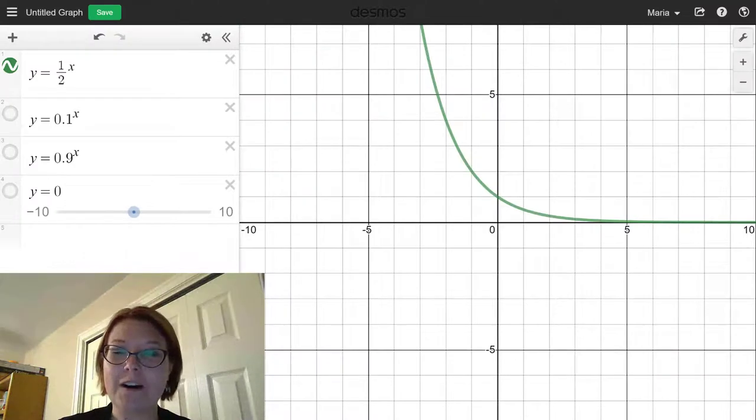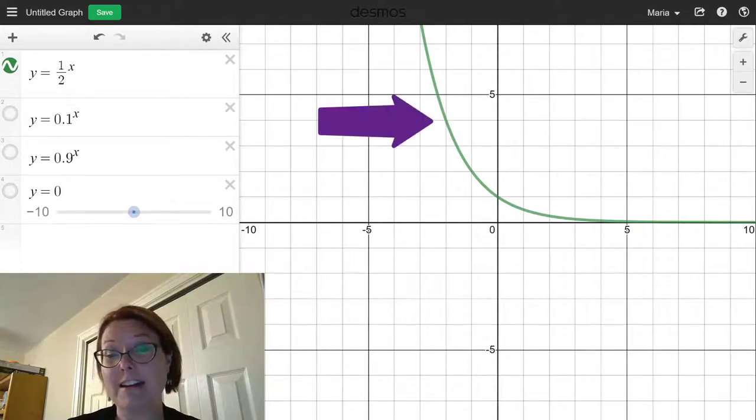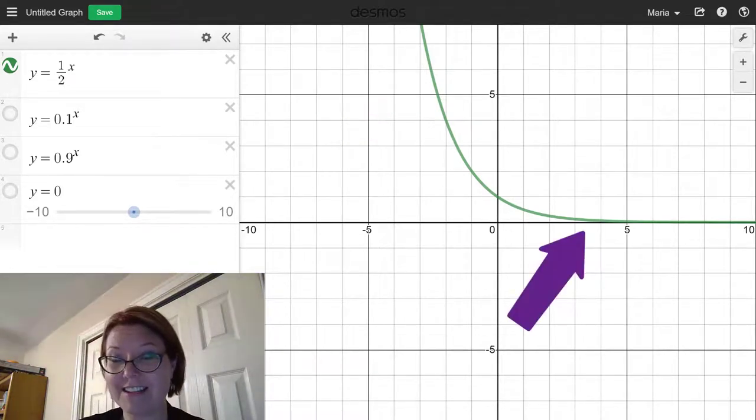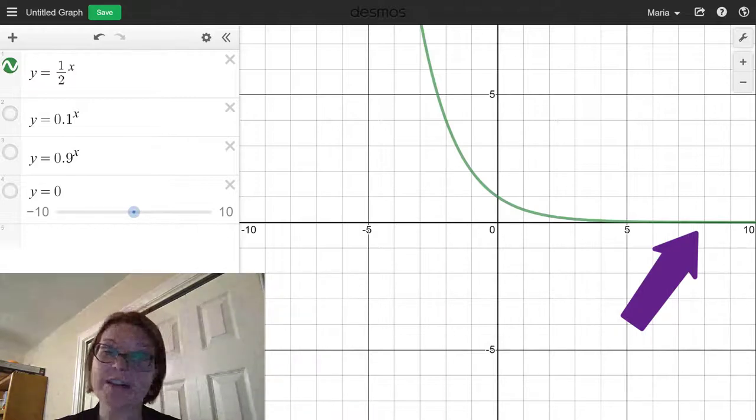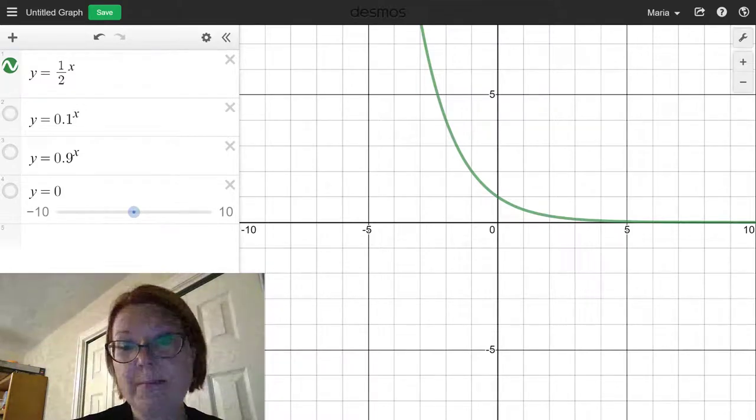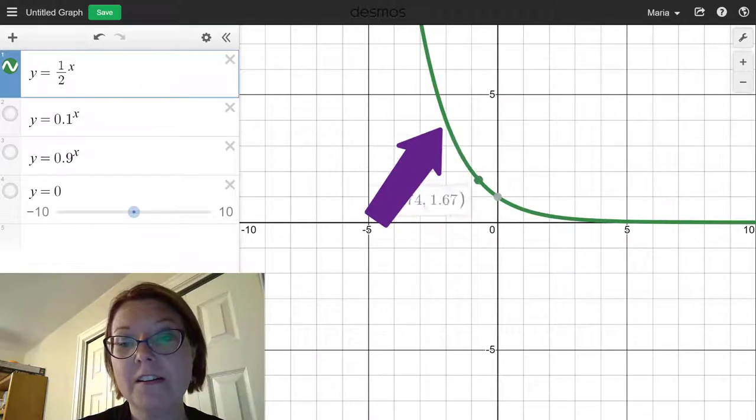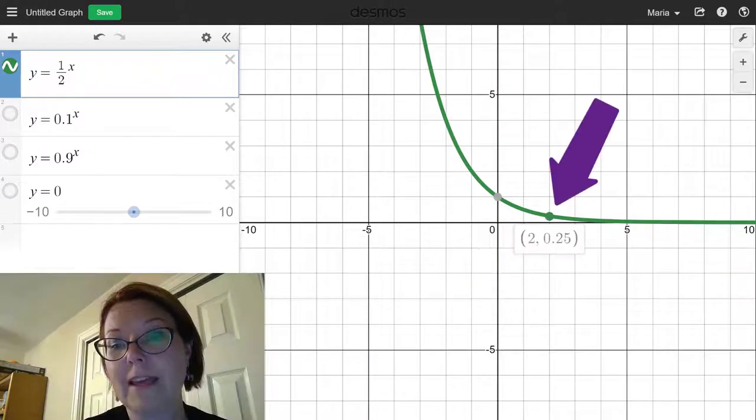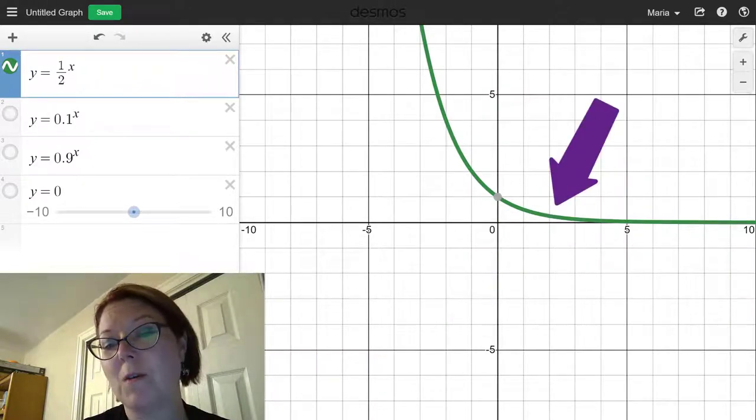Starting with y equals 1/2 to the x. This is a decreasing curve. It's always decreasing. Its steepest part is now to the left of the y-axis, and as it crosses the y-axis, it approaches the x-axis, getting flatter and flatter and flatter. It's almost like you're coming off of a mountainside into a flat valley. We have points here at negative 2, 4, at 0 comma 1, at 1 comma 1 half, and at 2 comma 0.25 or 2 comma 1 fourth.